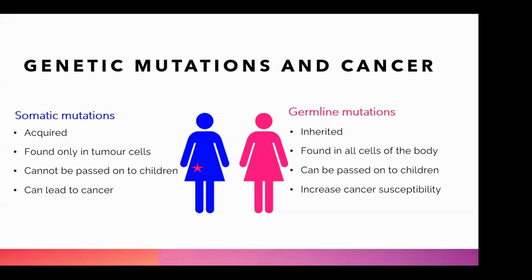So if they disrupt cell function enough, then that tumor can become cancerous as a result of those mutations in that cell. If you look at this picture here, where that little pink star is — that's for example the site of where the tumor would be, and the specific sporadic or somatic mutation is isolated there to that tumor.